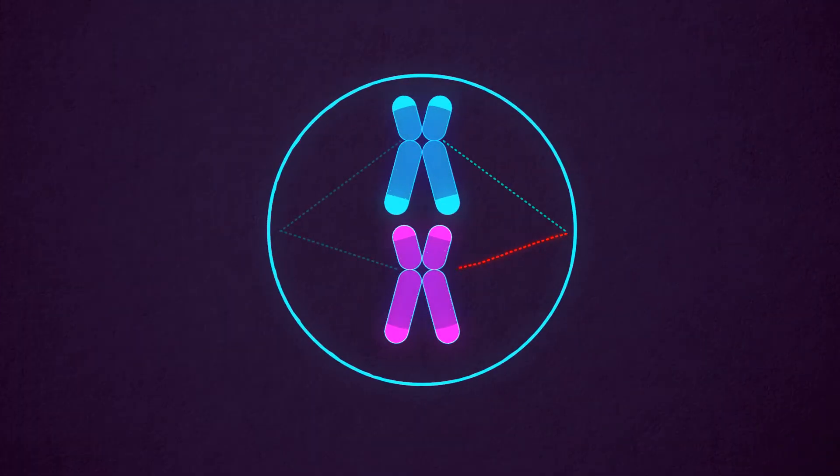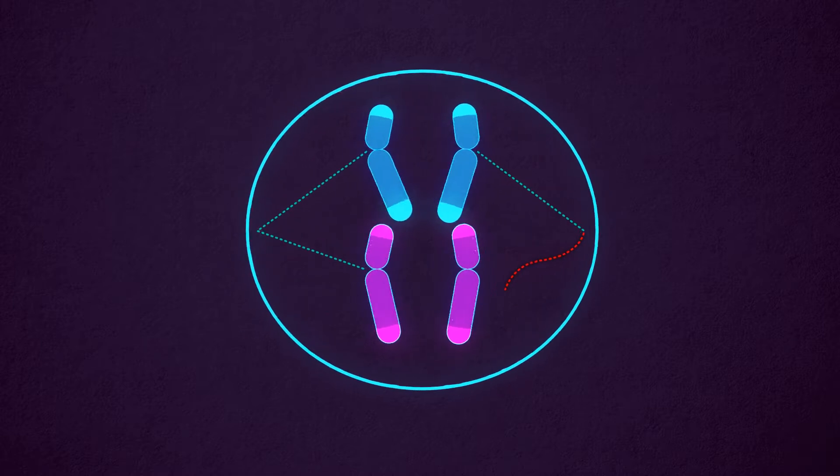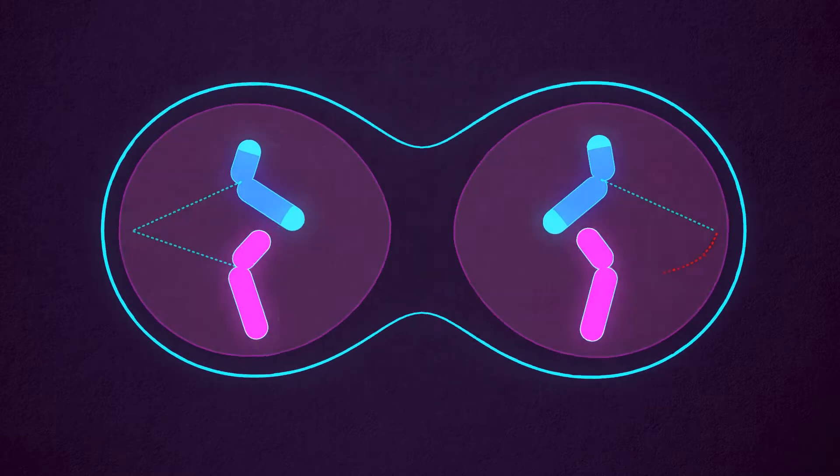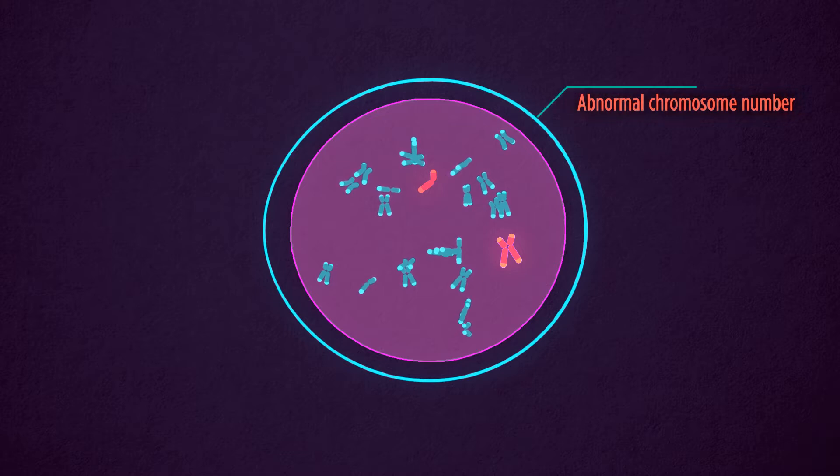One unattached or improperly attached centromere will block cell division. Defects in this molecular mechanism will give us two cells with an abnormal chromosome number. These cells are called aneuploid.